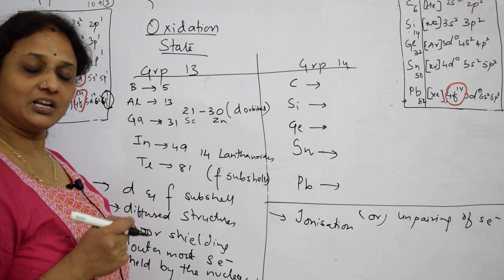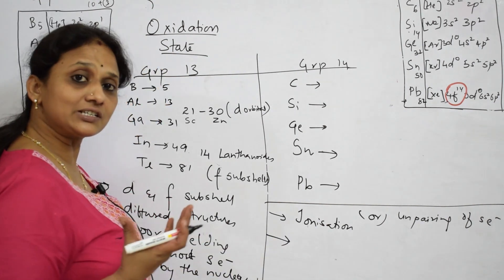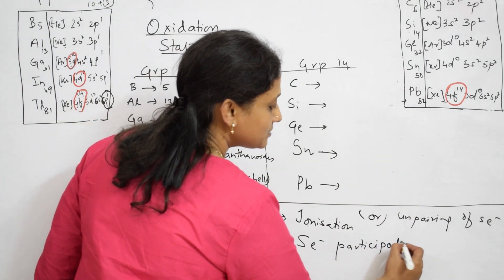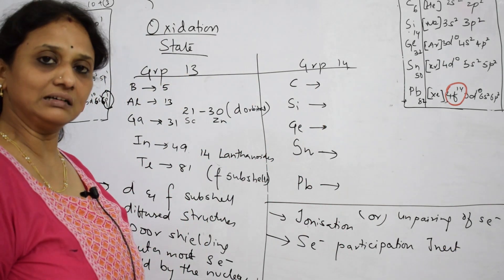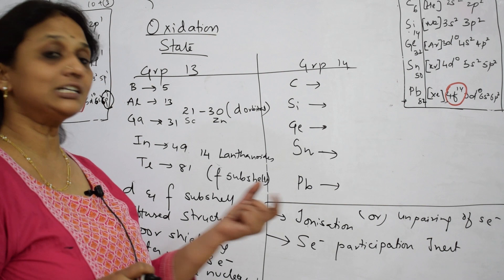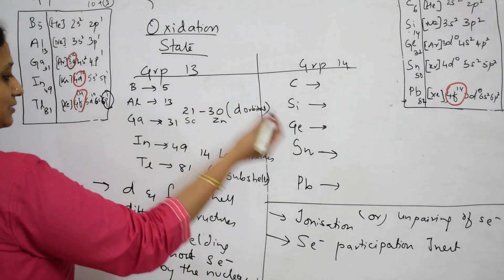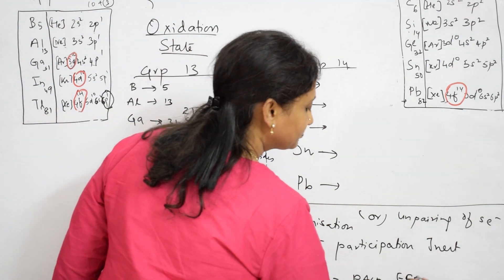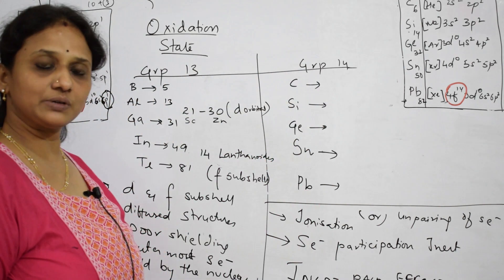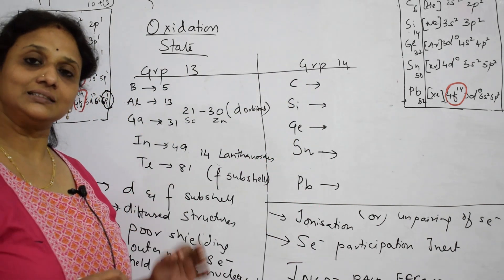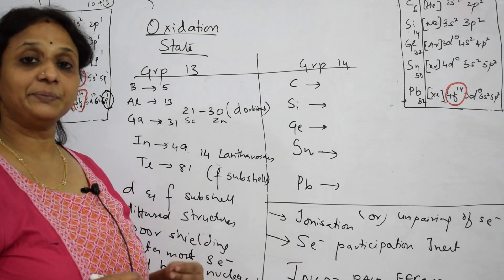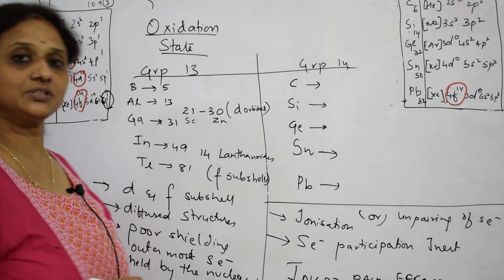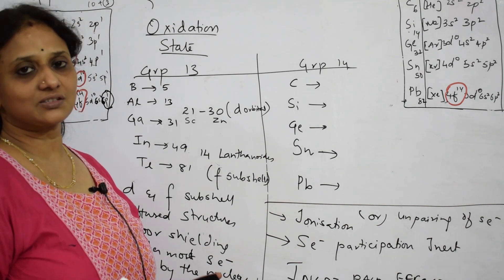When unpairing becomes difficult, the S electron's participation becomes inert. When S electron participation becomes inert, we call that concept the inert pair effect. In one term: inert pair effect is the reluctance of the S electron to participate in bonding due to ineffective shielding by the 4F subshell or the 3D subshell. That is what is called the inert pair effect.